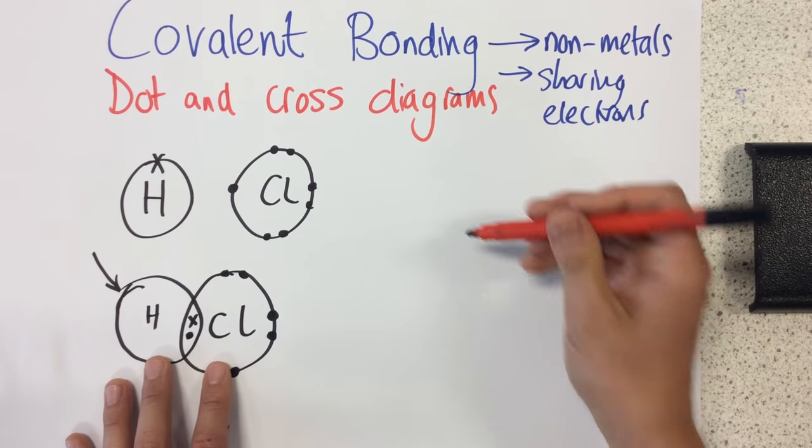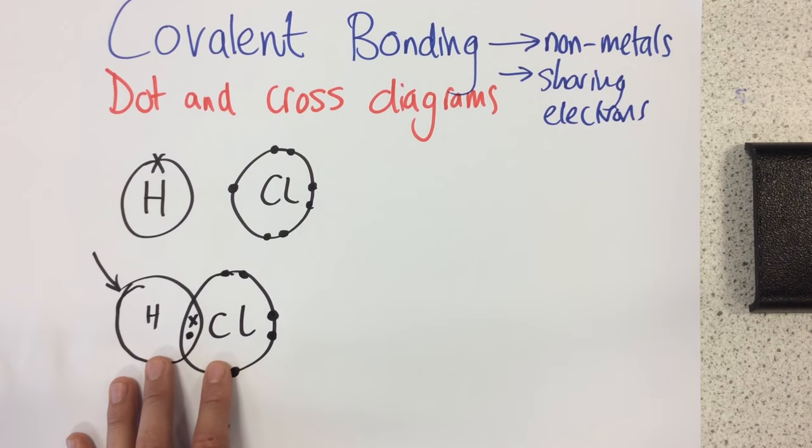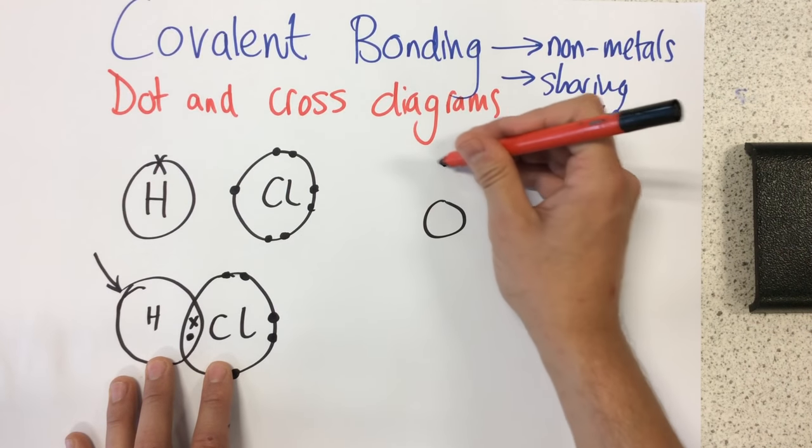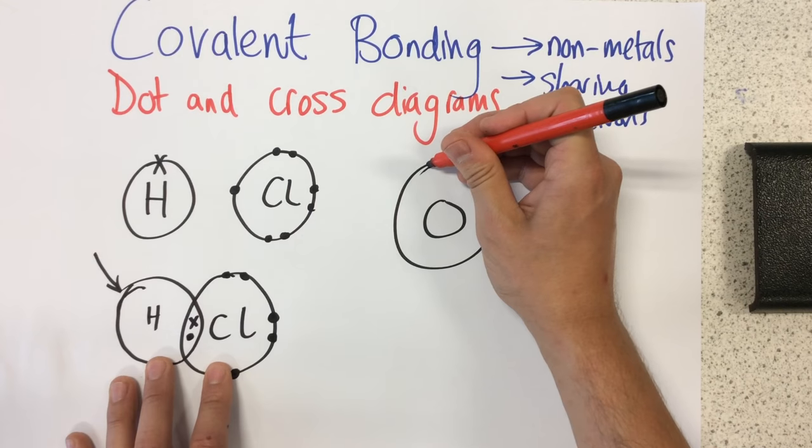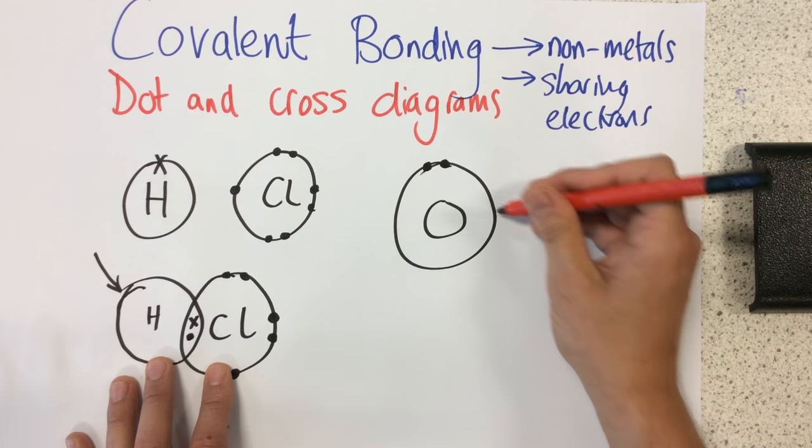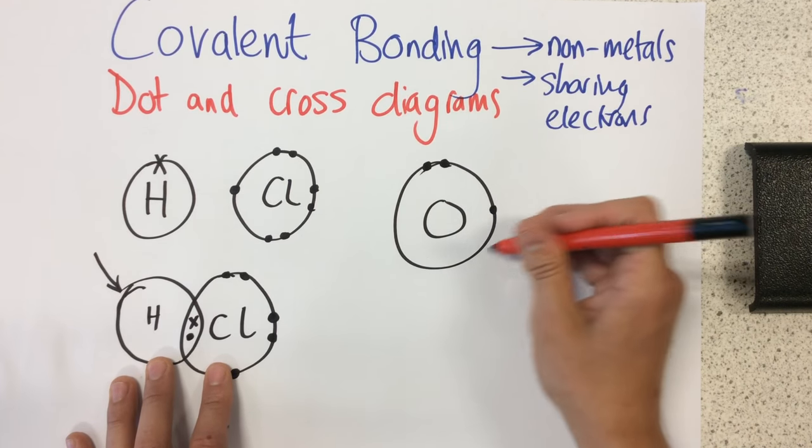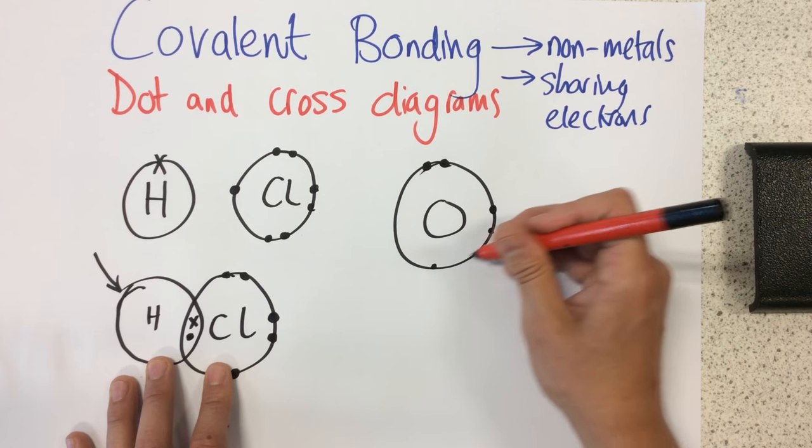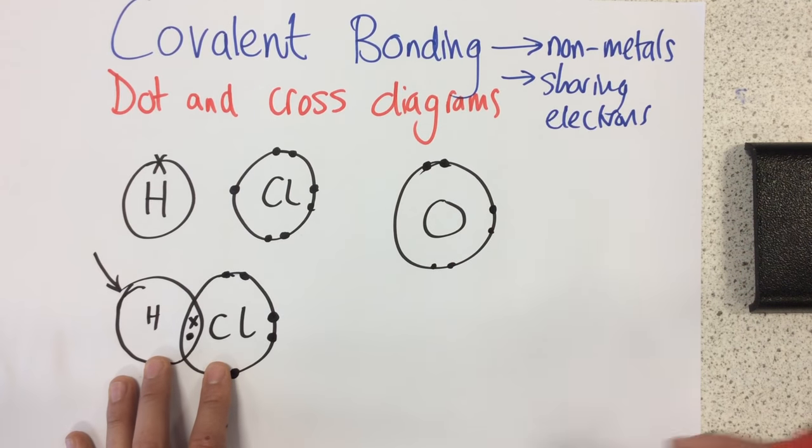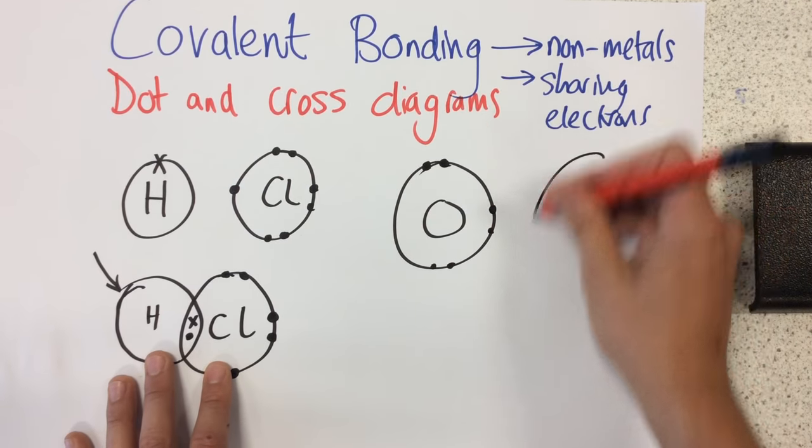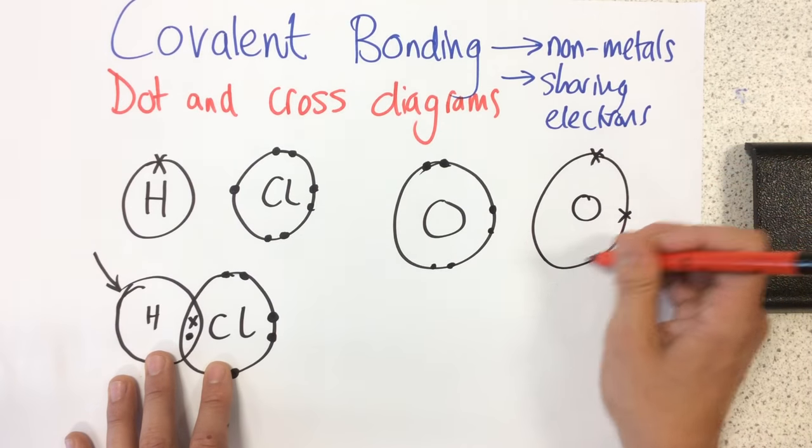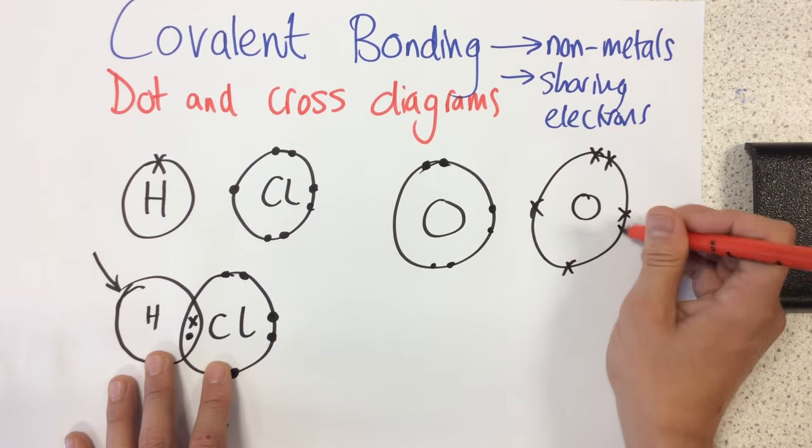Now the other example I'm going to do is I'm going to show you how to do an oxygen molecule. So here we have oxygen, which has six electrons in the outer shell. I didn't draw that very well, so I'm going to draw this one a bit better. There we go.